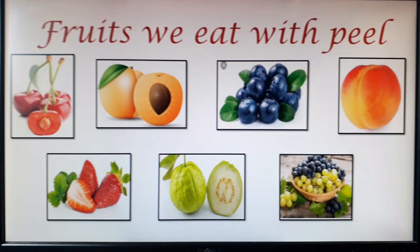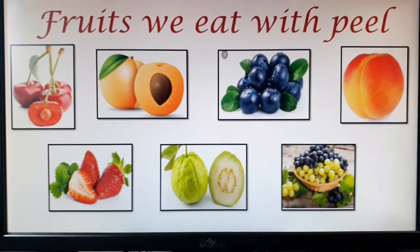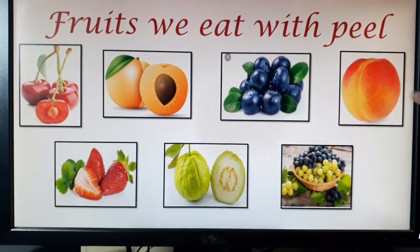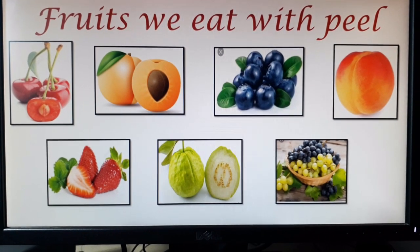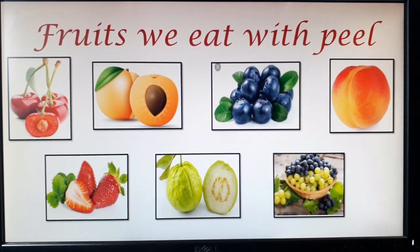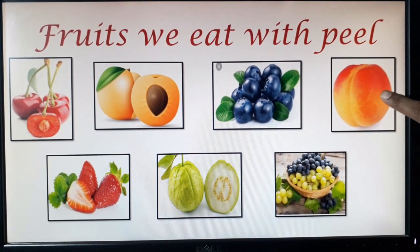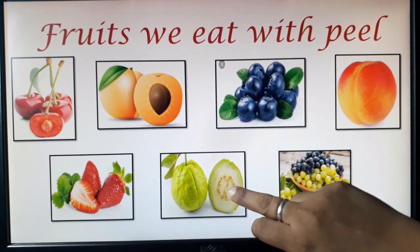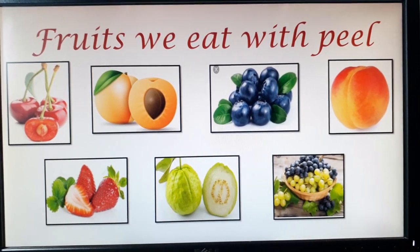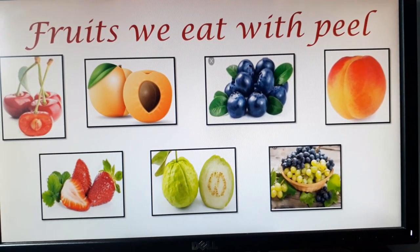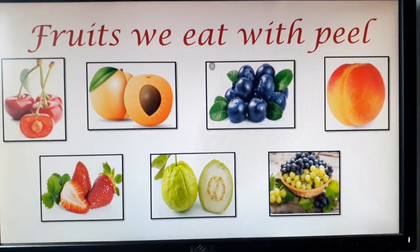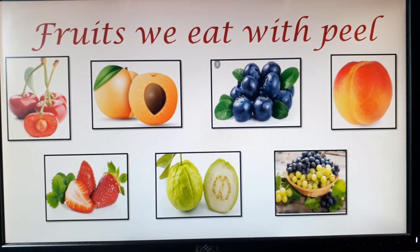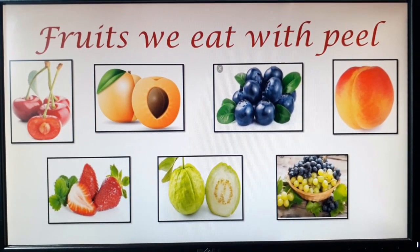Then we have fruits we eat with peel — there are some fruits which we eat with their peel. So we have cherries, apricots, blueberries, plum, strawberries, guavas, grapes, then we have jamun. There are a lot of fruits which we eat with their peel. Peel ka matlab kya hota hai? Chilka. Yeh wo fruits hain jinko ham chilka nahi utarte.